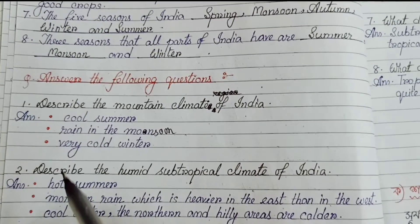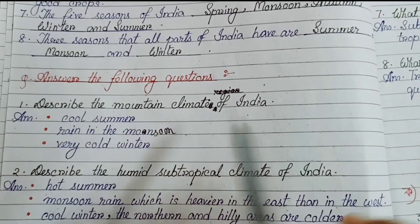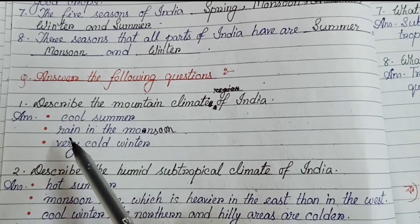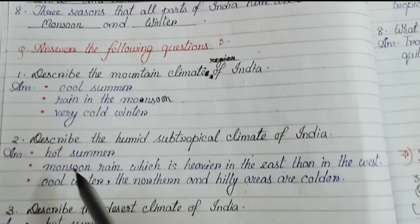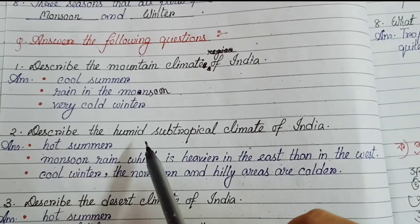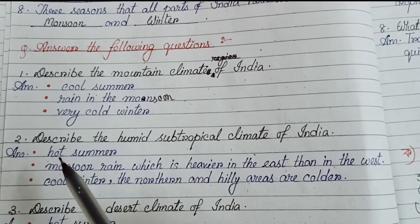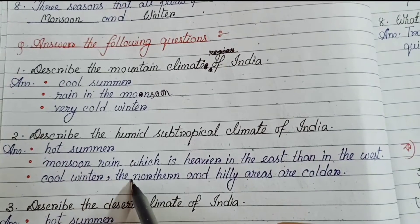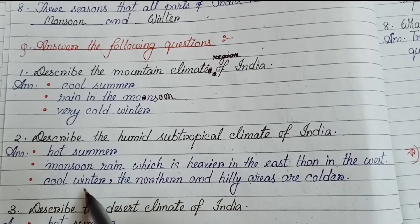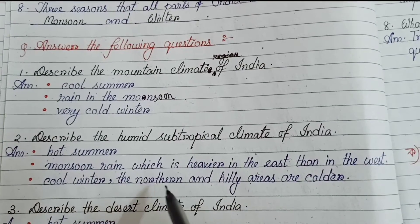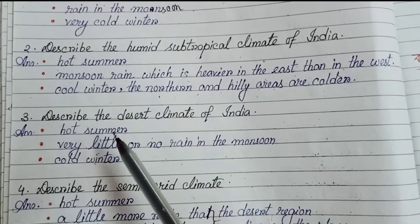Extra questions and answers. Number 1: describe the mountain climate of India — cool summer, rain in the monsoon, very cold winter. Number 2: describe the humid subtropical climate of India — hot summer, monsoon rain which is heavier in the east than in the west, cool winter; the northern and hilly areas are colder.